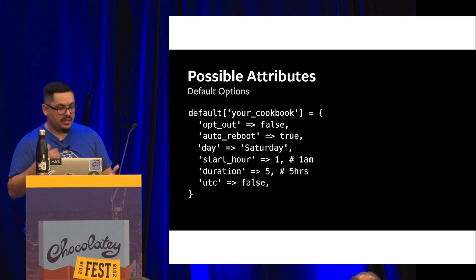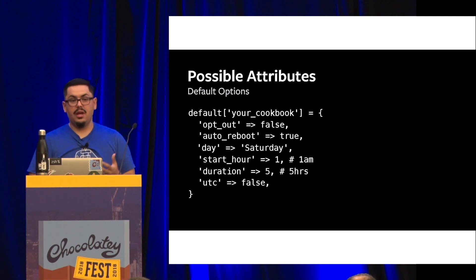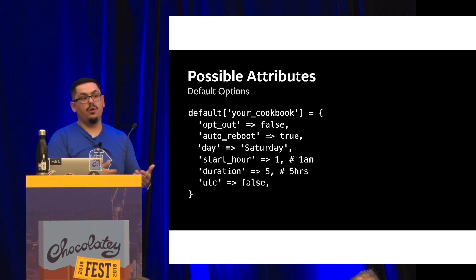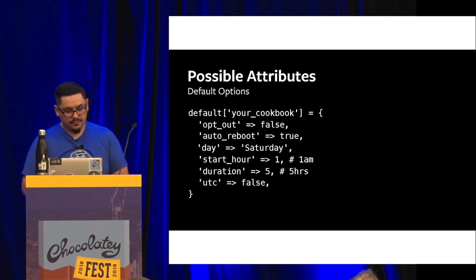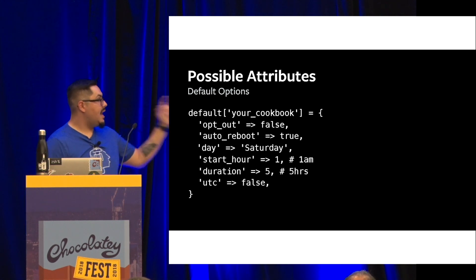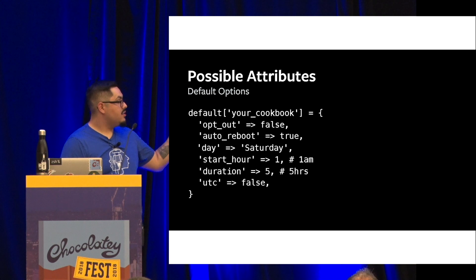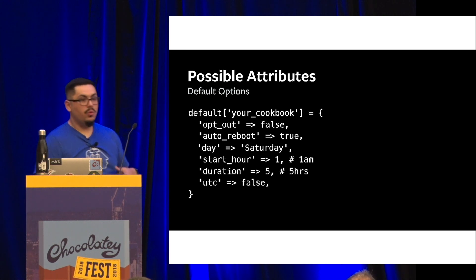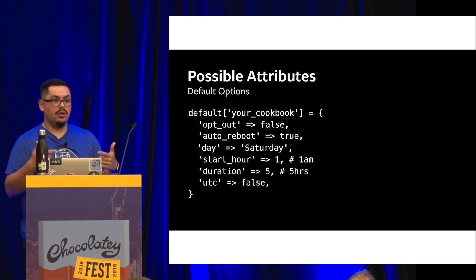The next thing is auto-rebooting — do you want us to actually auto-reboot? Maybe you want to opt in to the maintenance window but you don't want us to reboot. And the next four settings are all time settings. Here we're saying from Saturday, starting at 1 a.m., for the duration of five hours — so 1 a.m. to 6 a.m. — we want to have our window of maintenance happen.